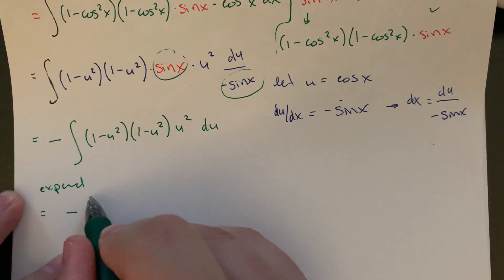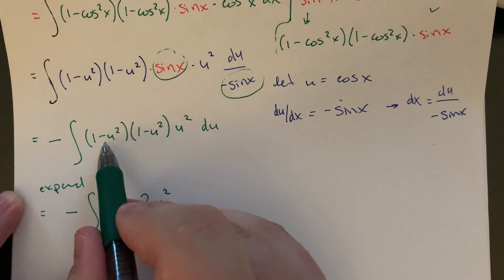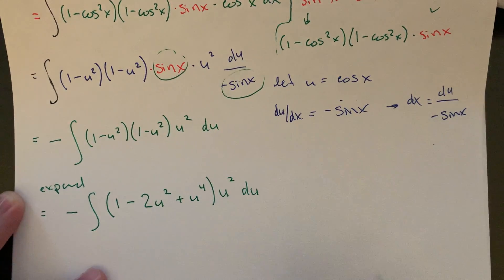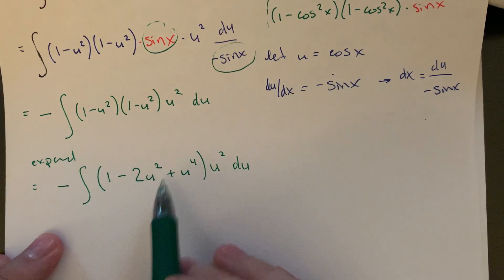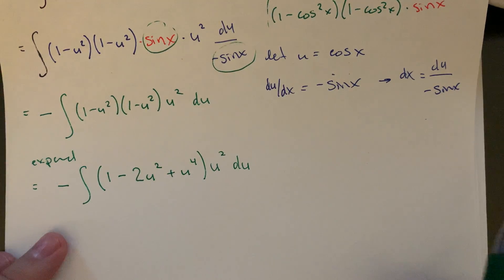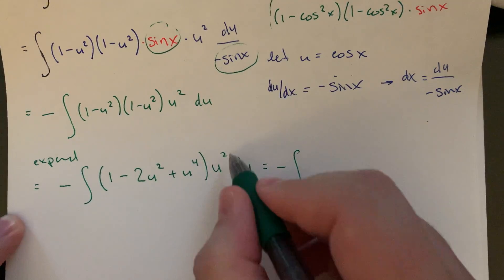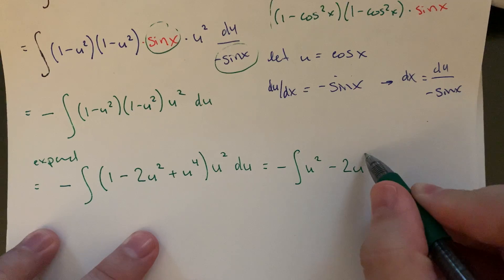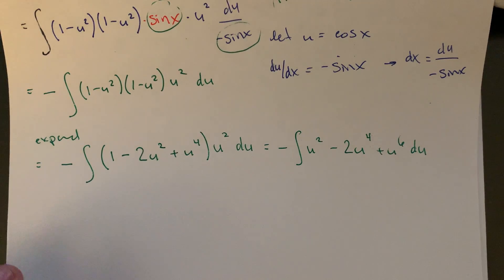Let's expand. First, one minus u squared times one minus u squared: one times one is one, minus two u squared, plus u to the fourth. Then multiply that whole thing by u squared: negative times u squared minus two u to the fourth plus u to the sixth du. Distributing the negative gives negative u squared plus two u to the fourth minus u to the sixth. It's easier to do this algebra with u's rather than writing cosine to the sixth, etc.